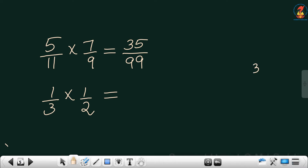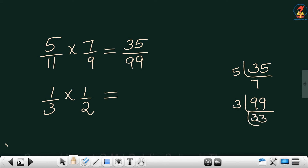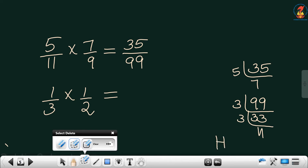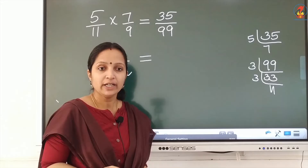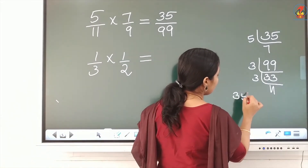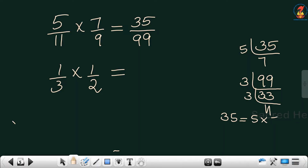Now try to write the lowest term. 35 is a multiple of 5 and 7. 99 equals 3 into 3 into 11. We did the prime factorization: 35 equals 5 into 7, and 99 equals 3 into 3 into 11. There is no common number, so the HCF is 1.